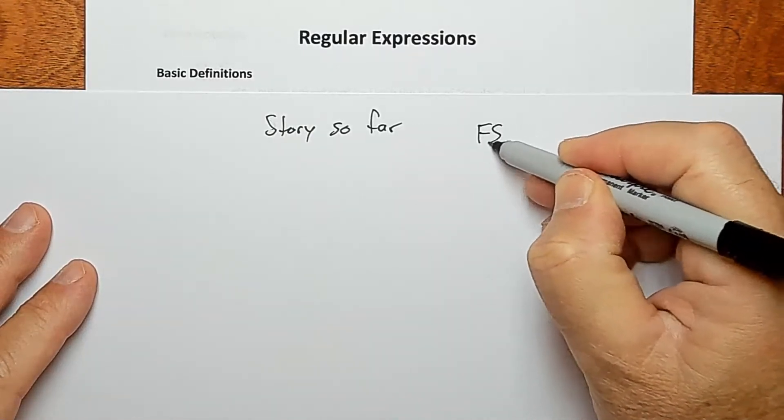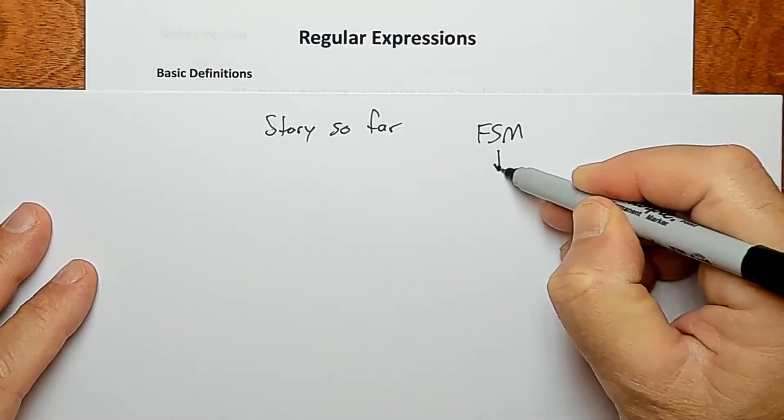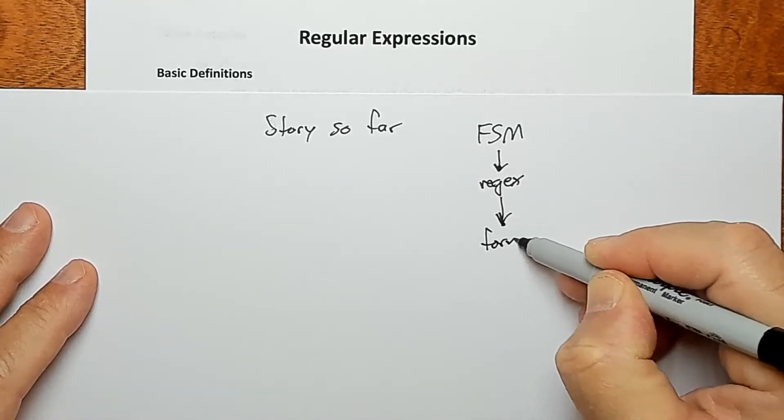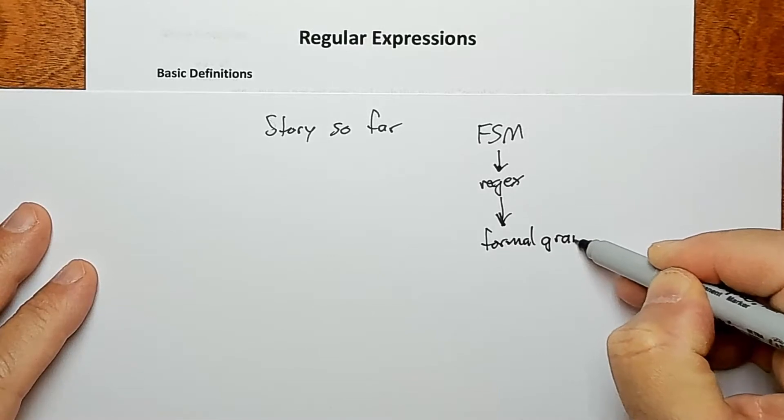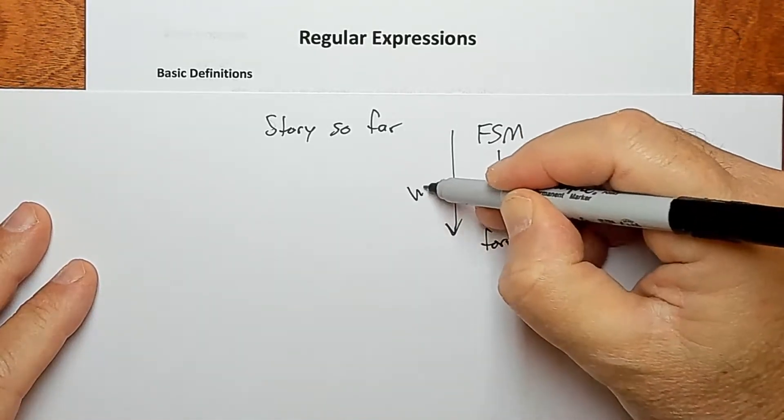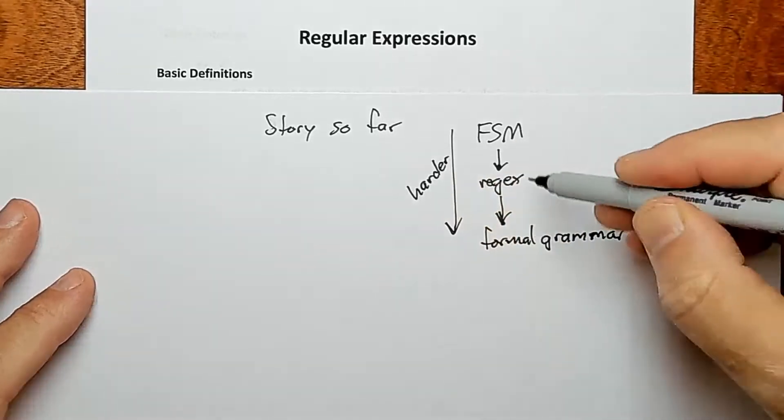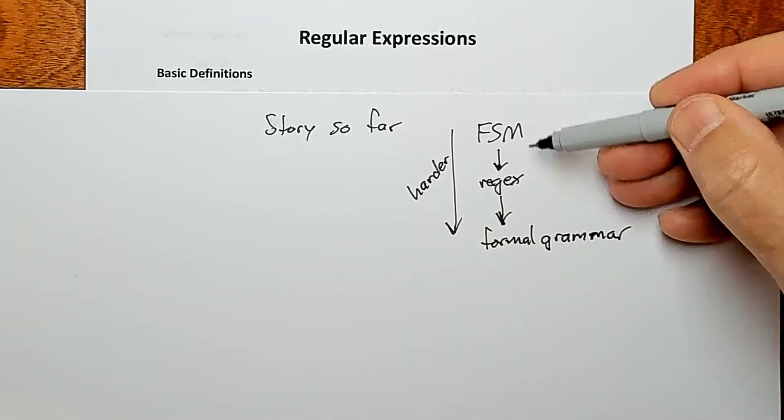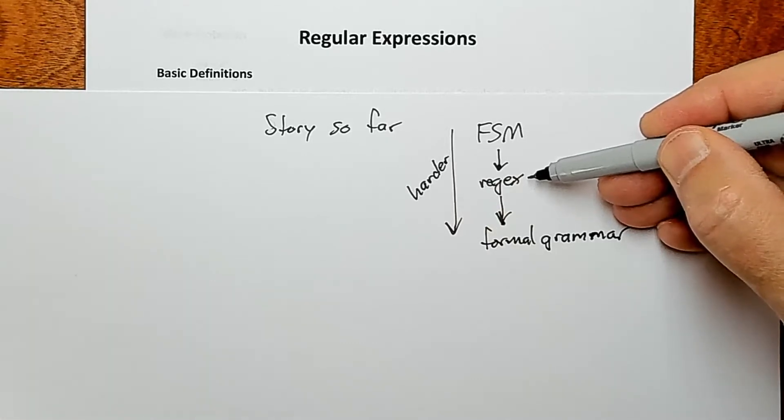We talked about finite state machines, then we're going to talk about regular expressions right now, and then that leads us into formal grammars. So these are kind of increasingly harder to understand. We've just done FSMs, and now we're going to do regex, and that hopefully will make formal grammars a little bit easier to understand.